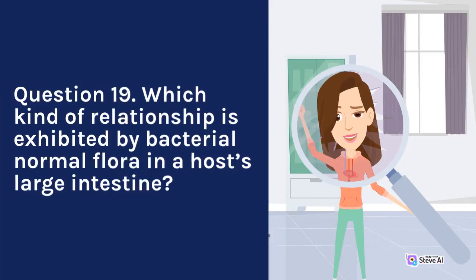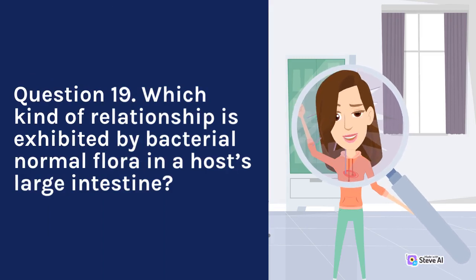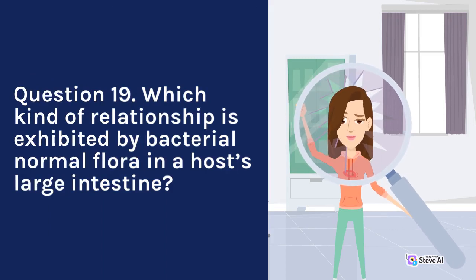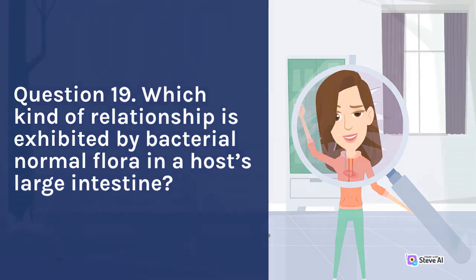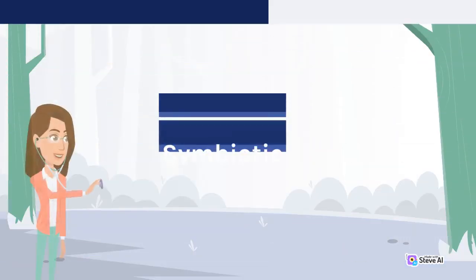Question 19. Which kind of relationship is exhibited by bacterial normal flora in a host's large intestine? A. Commensal. B. Parasitic. C. Symbiotic. D. Competitive. Answer: C. Symbiotic.